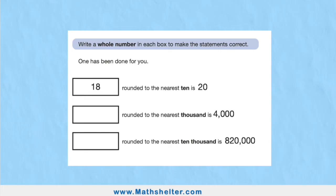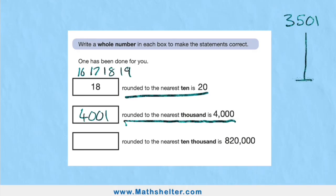Question 3. Write a whole number in each box to make these statements correct. One has been done for you. 18 rounded to the nearest 10 is 20. But in this case, 18 is not the only answer. And that's really important to understand. I could have had 16, 17, 18, or even 19. Because either of those numbers, rounded to the nearest 10 is 20. So question 2 that says rounded to the nearest 1,000 is 4,000. I could pick any number that when rounded to the nearest 1,000 equals 4,000. So I'm going to keep it really simple. And I'm going to say 4,001. But I could have picked anything all the way from 3,501 all the way to 4,499.